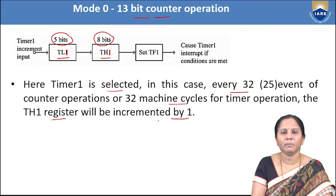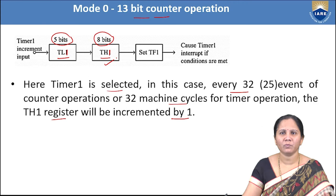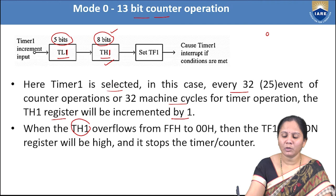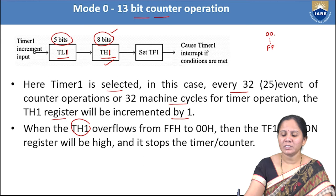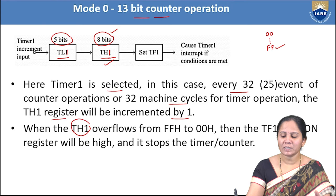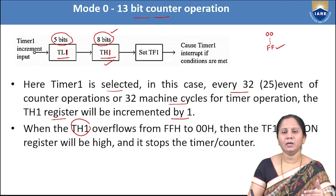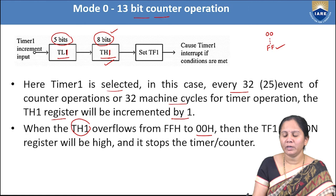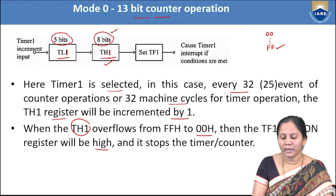When TH1 reaches FFH and is incremented again, overflow occurs and TH1 rolls back to 00H. The TF1 bit of the TH1 register goes high, indicating overflow, and the timer counter is stopped.